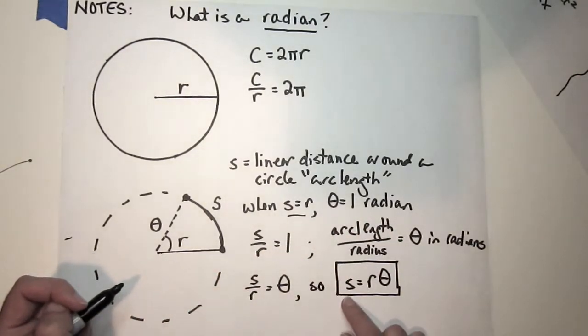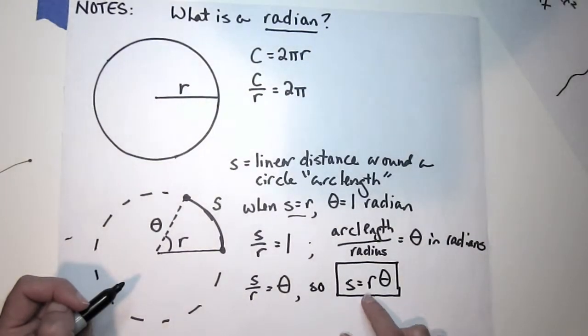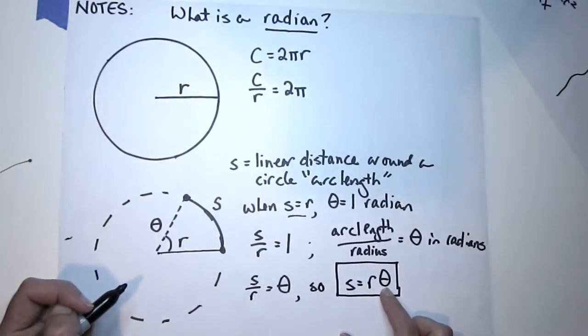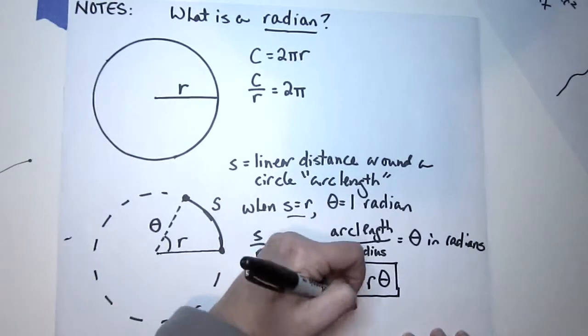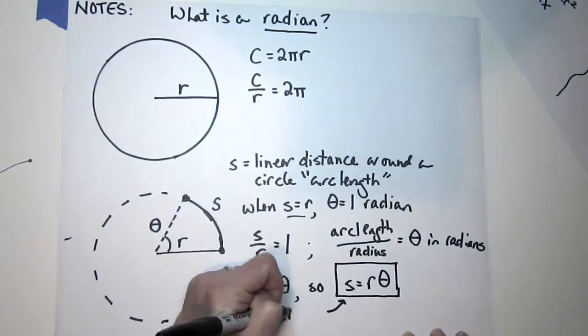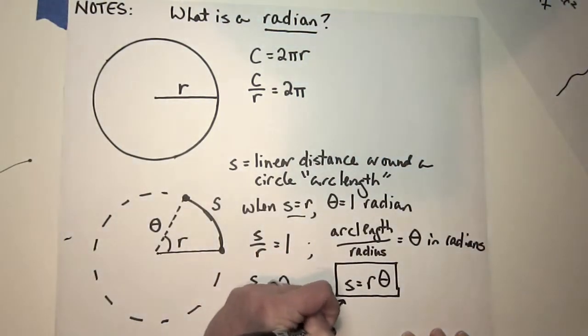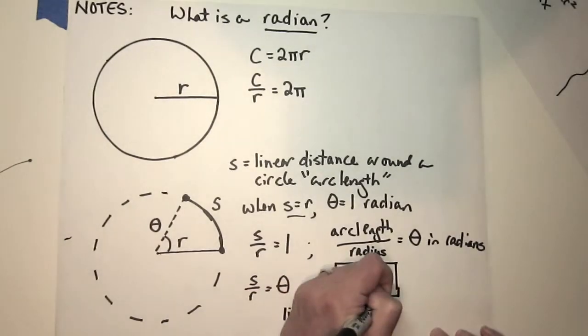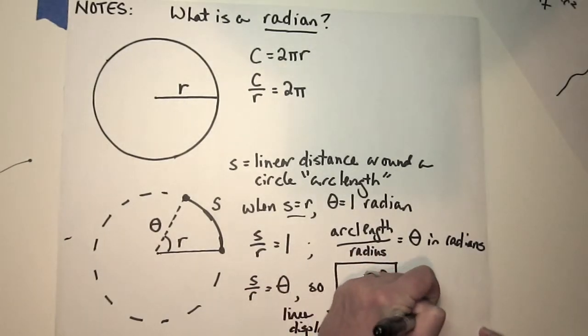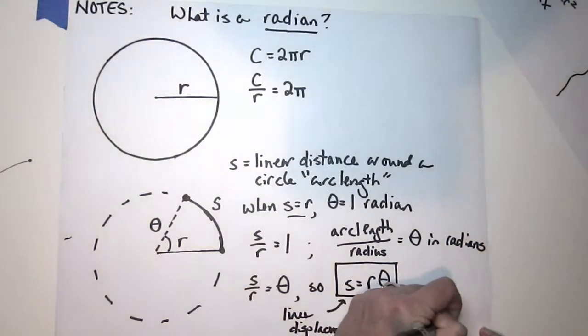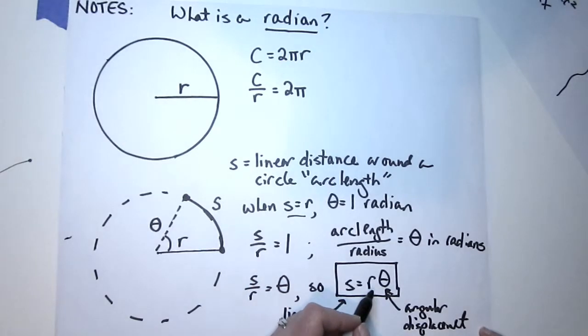So the linear distance an object travels equals the radius of the circle it's traveling times the angular displacement in radians. This is a linear displacement, this is an angular displacement. The translator is this r factor.